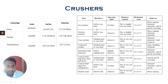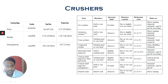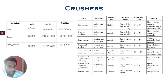Jaw crushers can be used for soft to very hard ores with no abrasion limit. Moisture content requirements are dry or slightly wet but not sticky, because sticky material will not move properly through the crushing zone. The reduction ratio ranges from 3:1 to 5:1, and jaw crushers are mainly used in heavy mining and quarry applications.